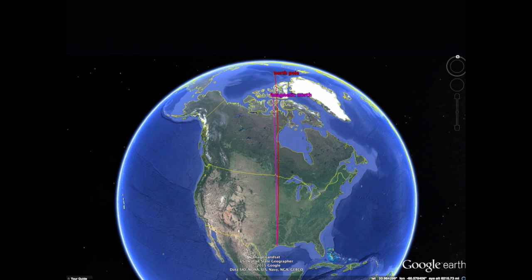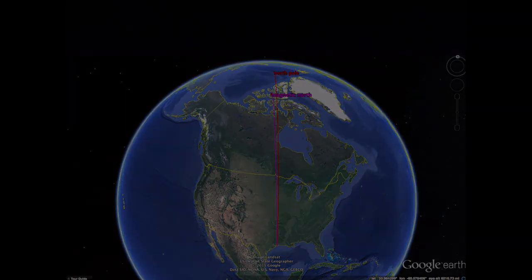Finally, if we move to the center of the United States, we see that the lines are pretty much on top of each other — this happens to be a line of zero declination. On this line, your compass needle points to both true north and magnetic north. Looking at a declination chart of the United States, the values are just about what we found from Google Earth. The blue lines show areas of east declination and the red lines show areas of west declination, varying from about 17 degrees east in the Pacific Northwest to about 17 degrees west in Maine. The black line in the middle shows a line of zero declination.